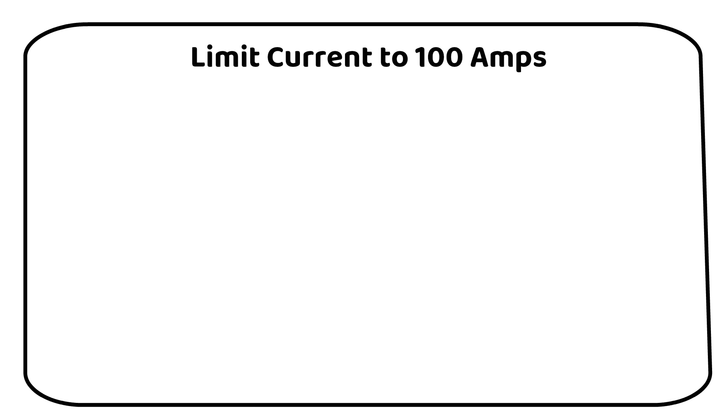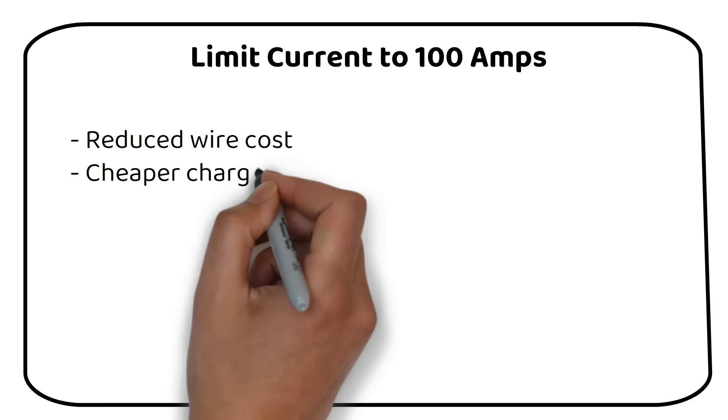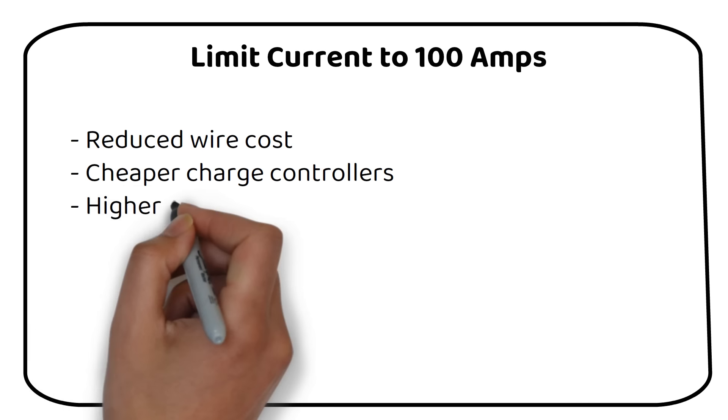In an off-grid solar power system you should limit the current to 100 amps. This has several reasons and benefits: reduced wire cost, cheaper charge controllers, and higher efficiency.